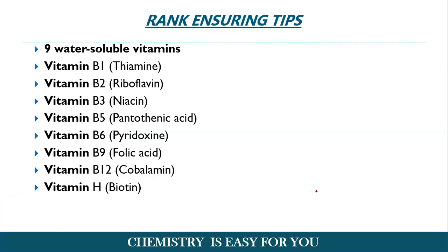Now here are a few rank and sharing tips. These are the names of water-soluble vitamins and their alternate names as well. Here we have vitamin B1, which is also known as thiamine. B2, called as riboflavin. B3, called as niacin. And B5, called as pantothenic acid. B6, known as pyridoxin. B9, called as folic acid. B12, which is cobalamin. And vitamin H, known as biotin.